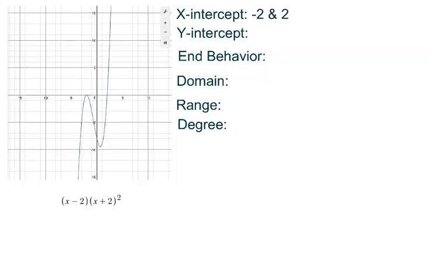In this example, we have a cubic function. Because our functions are already factored, we can determine that our x-intercepts are negative 2 and 2.